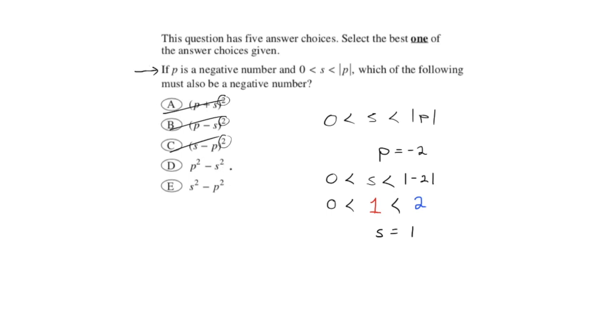Option D. P squared minus s squared. That would be negative 2 squared minus 1 squared. Negative 2 squared, that's negative 2 times negative 2, that's 4. And 4 minus 1 squared, that's 4 minus 1. So we have 3. This is not a negative number, so it cannot be this one.